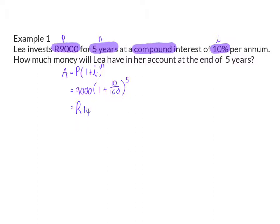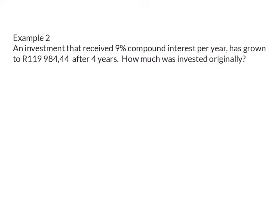Example 2: An investment that received 9% compound interest per year has grown to R119,984.44 after 4 years. How much was invested originally? Again, I'm going to start off determining what information was given, and here the 9% compound interest gives me the interest as well as shows me which formula to use.